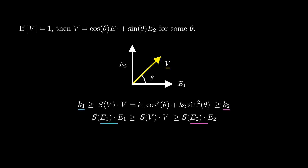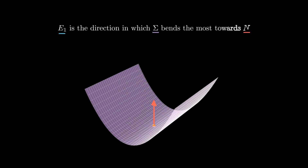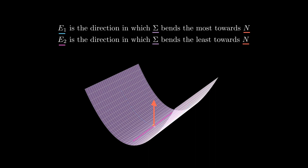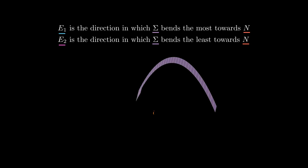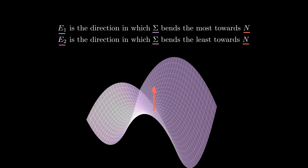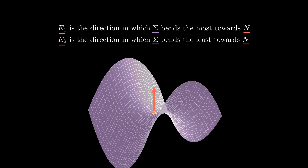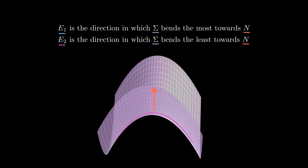From here we can extract the geometric meaning of the directions e1 and e2: e1 is the direction in which the curve bends the most towards n, and e2 is the direction in which the curve bends the least towards n. For example, on a cylinder, e1 is the direction that bends upwards and e2 is the flat direction. On a saddle surface, e1 is the direction in which sigma bends upward, and e2, the orthogonal complement, is the direction in which sigma bends downward.